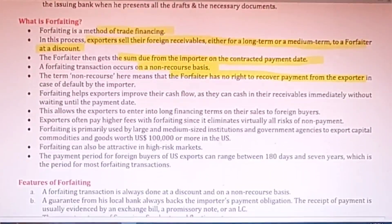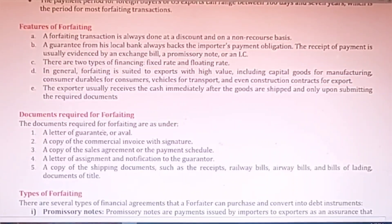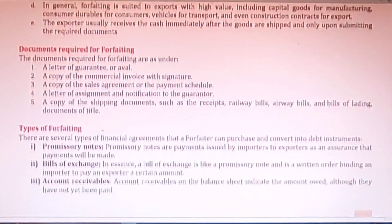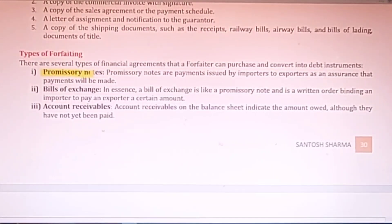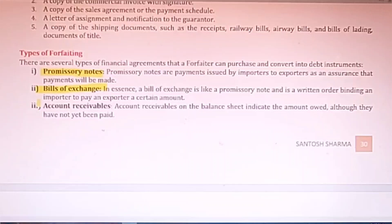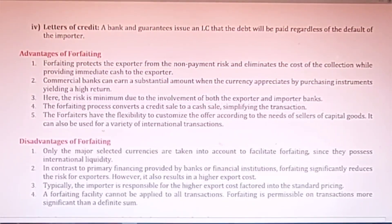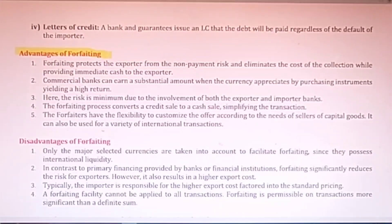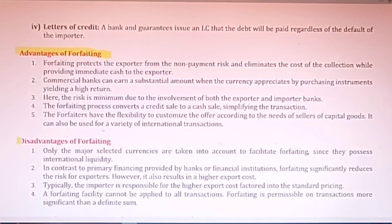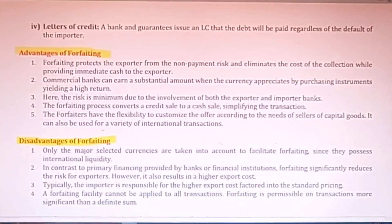Forfeiting is a very important topic. The documents required for forfeiting include bills of exchange, promissory notes, and accounts receivables — these can be forfeited through a forfeiter. There are some advantages of forfeiting because the company can immediately get payment for its sale. There are also disadvantages, because the company has to pay a discount and a commission to the forfeiter.